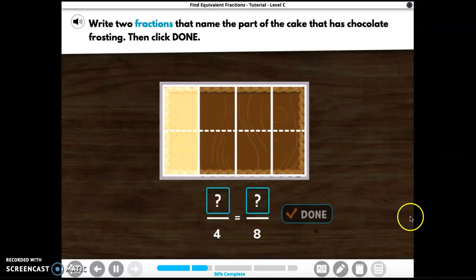Three, one, two, and three. And now there's eight. How many pieces are chocolate? One, two, three, four, five, six. That means three fourths is equivalent to six eighths.